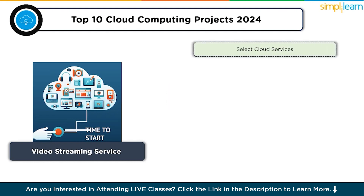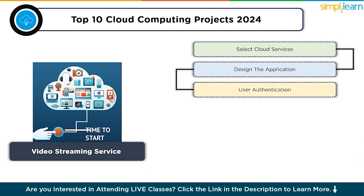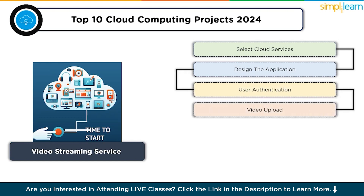Start by selecting cloud services: use AWS S3 for video storage, AWS Elastic Transcoder for encoding, and AWS CloudFront for content delivery. Plan the architecture of your video streaming platform, including user interfaces for uploading and streaming. Implement user authentication using services like AWS Cognito.